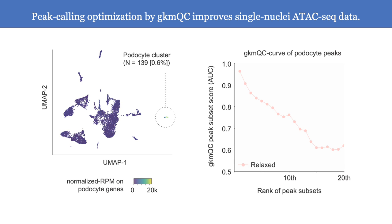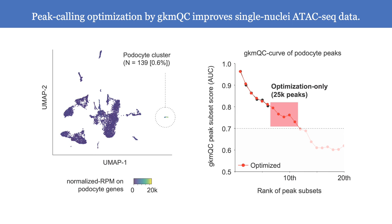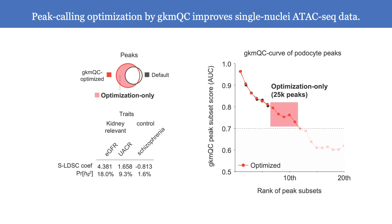So we re-called the peaks with a relaxed statistical threshold, then filtered out the peak subset with low AUC score, and now we can get more than 25k additional podocyte peaks through GKMQC optimization. Using stratified LD-score regression, we also successfully identified the additional peaks which contribute to heritability of kidney functional traits. The contribution to heritability is specific to kidney-relevant traits, suggesting that the newly added peaks have tissue-specific function.